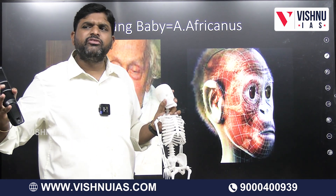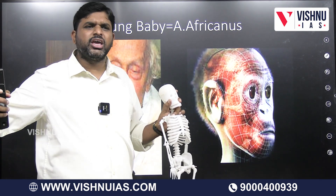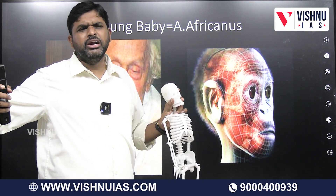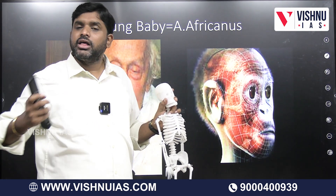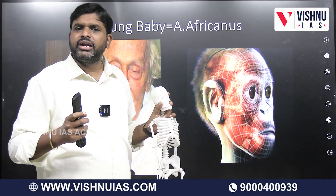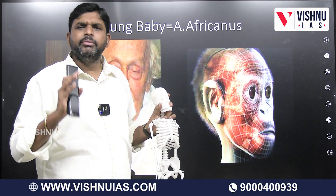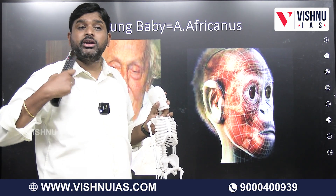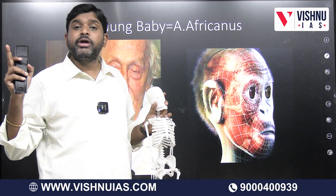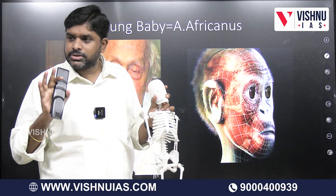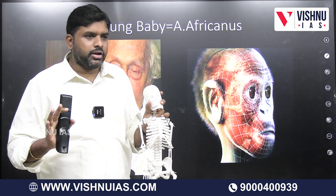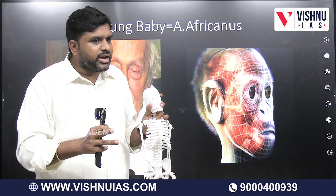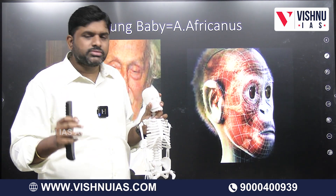The Robustus variety is 8 feet tall and very stocky, strongly built. Whereas the Gracile variety is only a little bit heavier compared to modern man, but smaller when compared to the Robustus. So we have the Gracile variety and the Robustus variety.